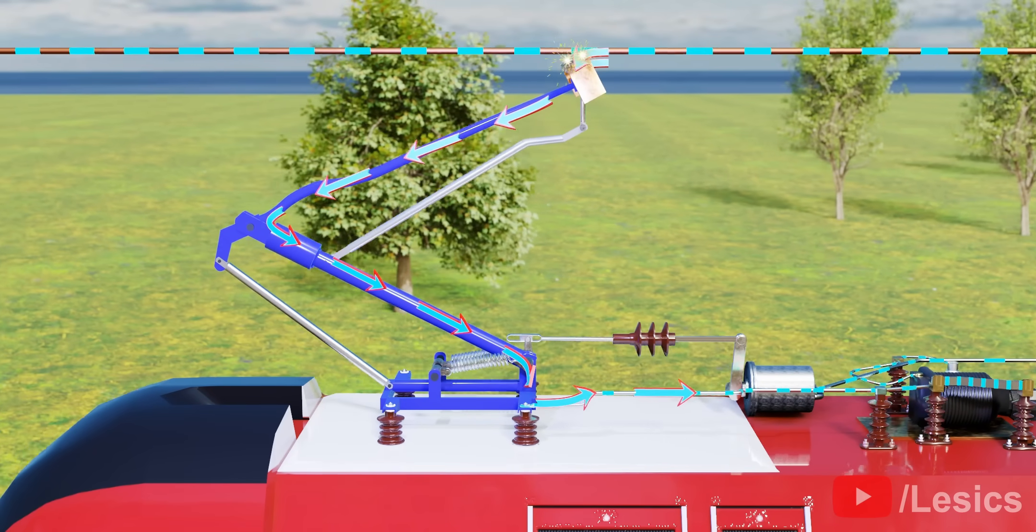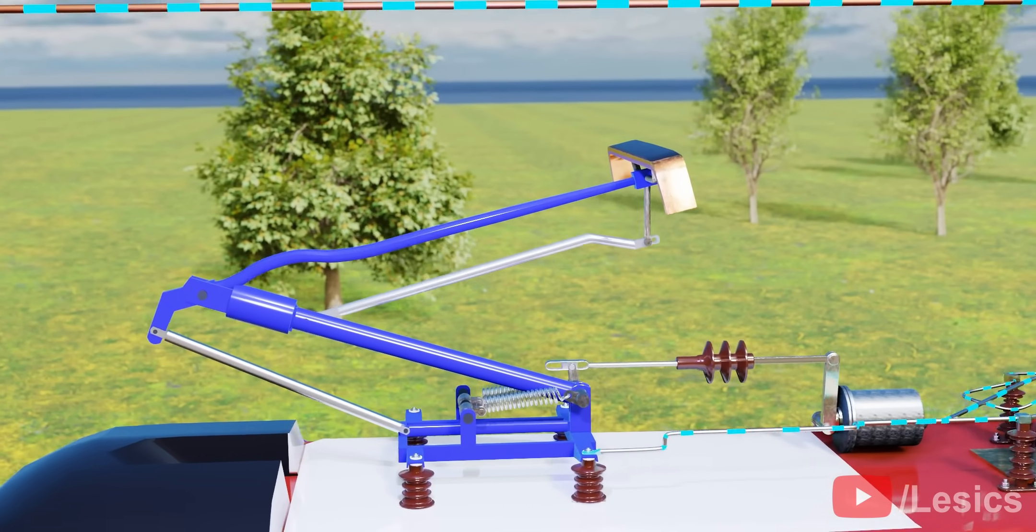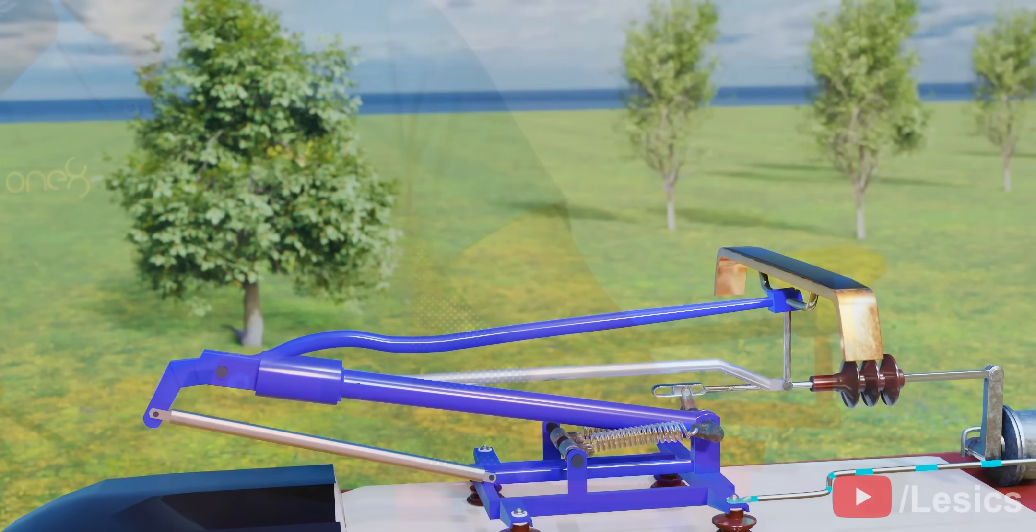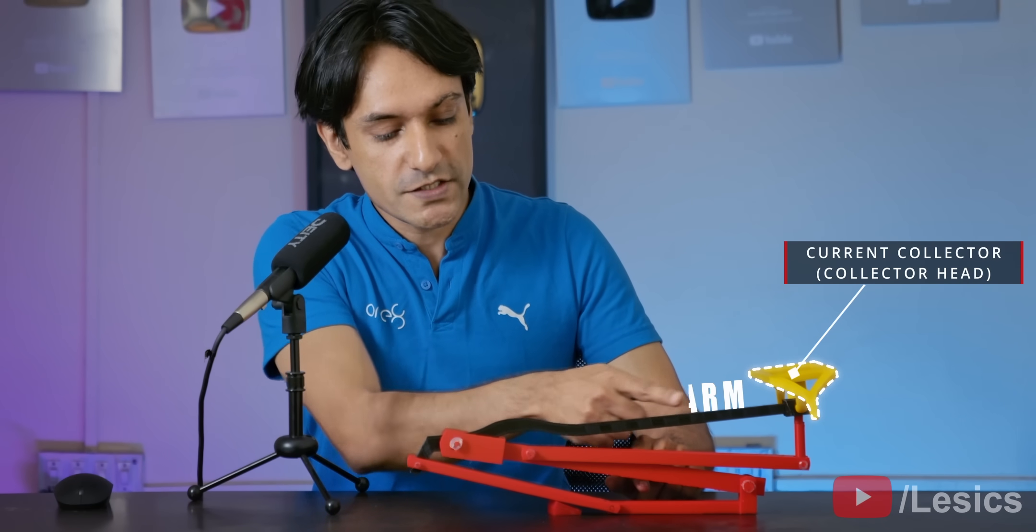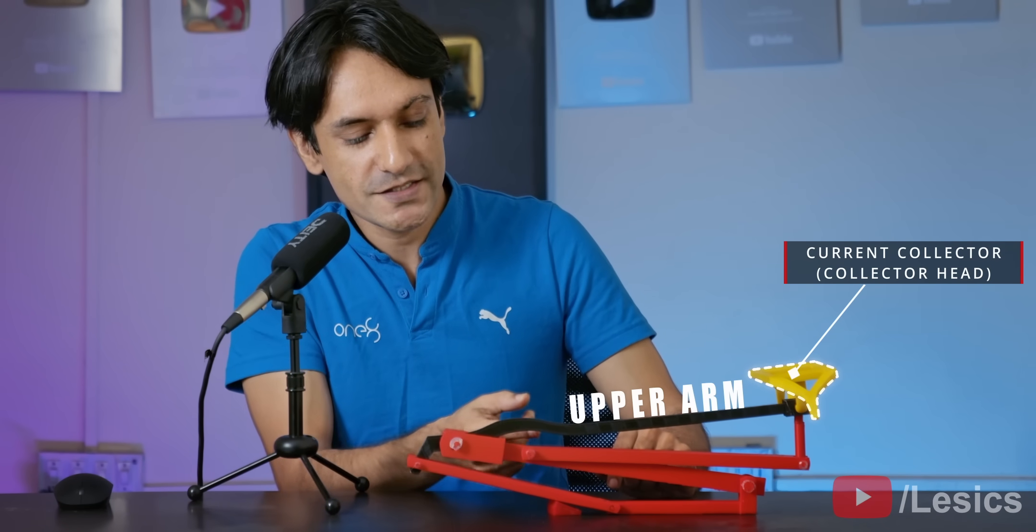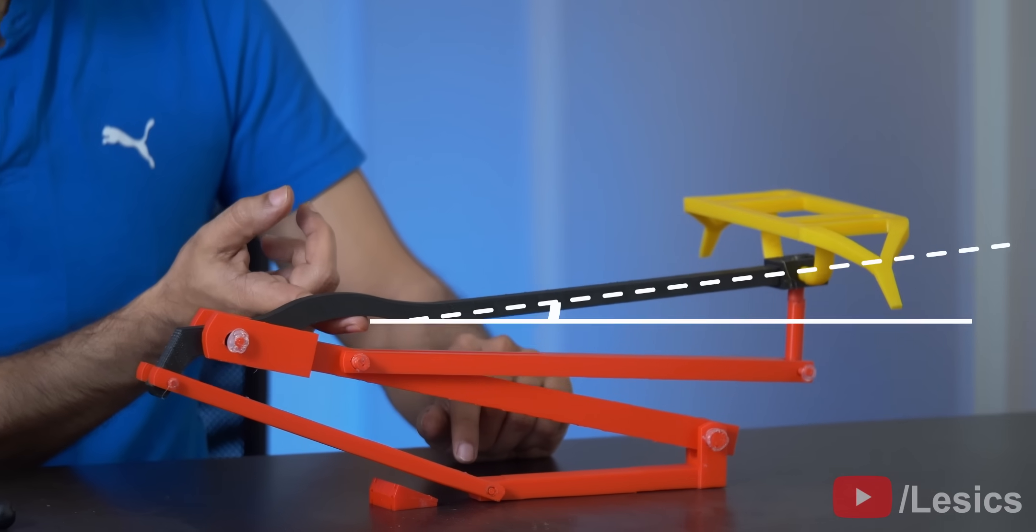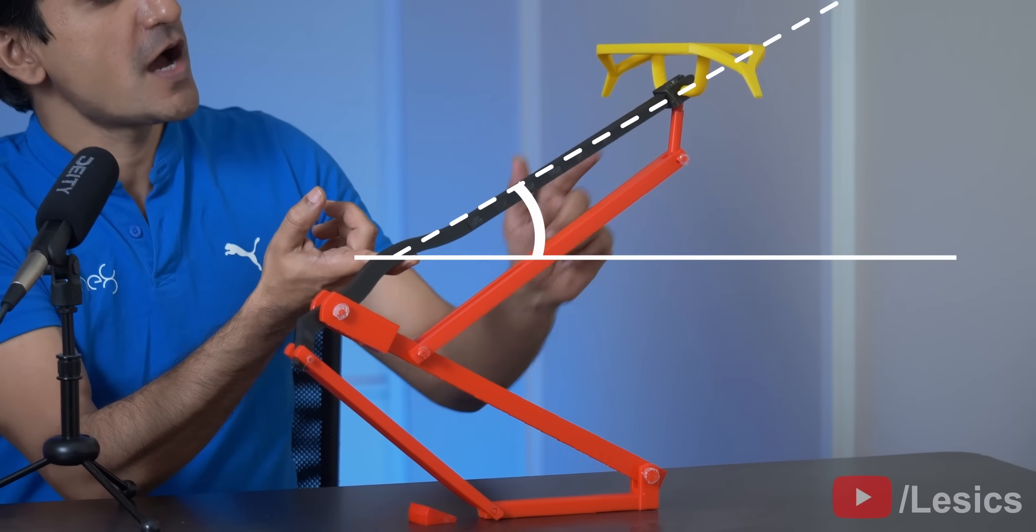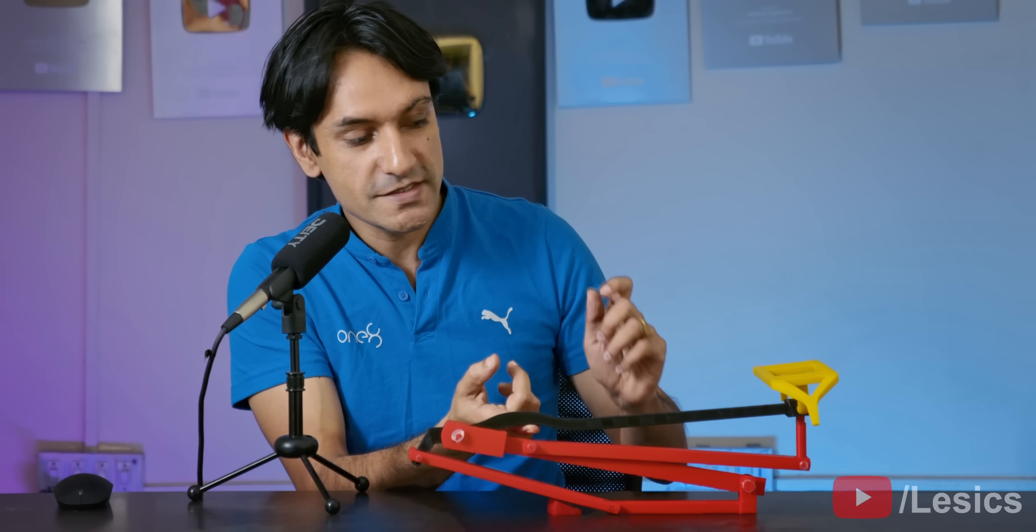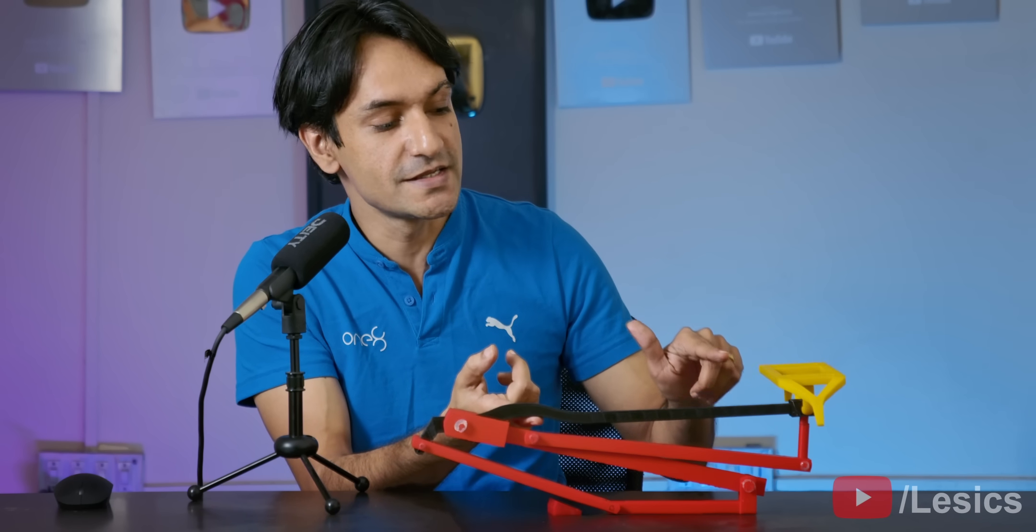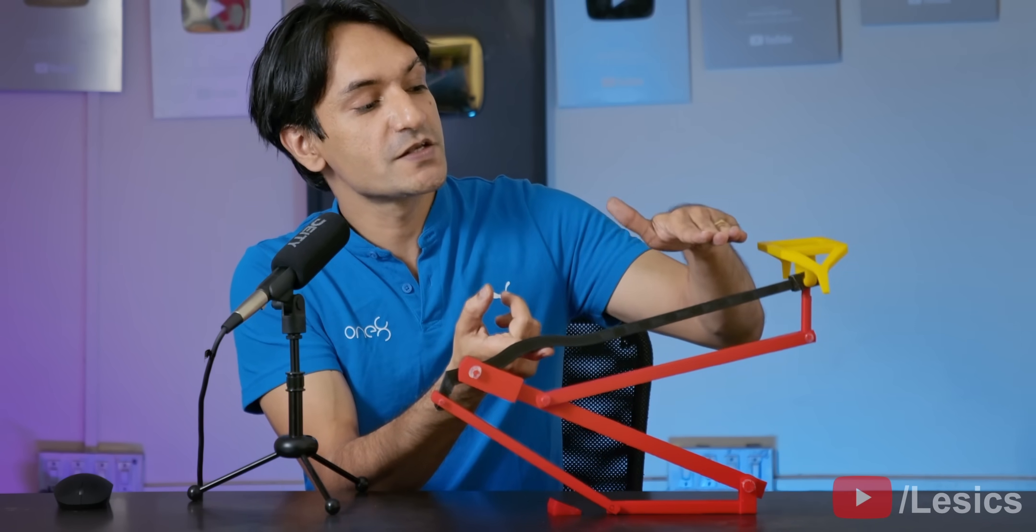To better understand this important quality of modern pantographs, let's examine this scaled-down demonstration. The current collector is connected with this upper round. You can notice when I push the pantograph up, the angle of the upper round changes. It changes a lot. Surprisingly, the angle of the current collector doesn't change. It just remains horizontal.